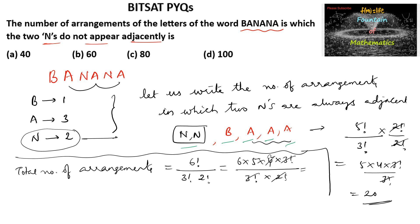We can write here 60, but among the 60, 20 arrangements are there with 2 N's adjacent. So the required number of arrangements can be given by 60 minus 20, which equals 40 arrangements.